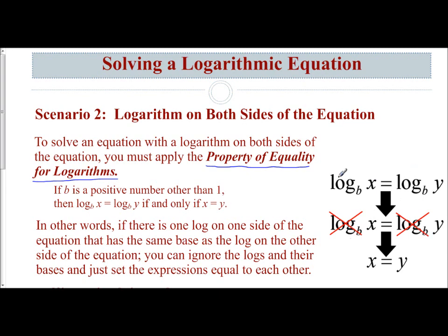What this means is that if you have the same log on both sides — one log on the left, one log on the right, the same exact base — you are taking the log of an expression and saying it's equal to the log of another expression. You can ignore the logs. Since log base b of x equals log base b of y and it's the same log, you can just cross them out and set x equal to y. That's the basic explanation of the property of equality for logarithms.